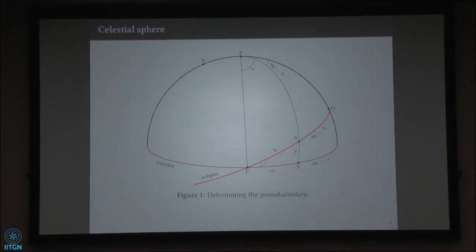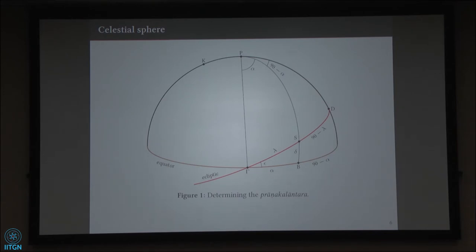We also know the obliquity of the ecliptic, which is the angle between the ecliptic and the equator, represented by epsilon. Because this is lambda, this will be 90 minus lambda, and this will be 90 minus alpha. This angle will be alpha, and this will be 90 minus alpha. So what we are interested in finding is the difference between longitude and right ascension, or knowing one, how do we determine the other.